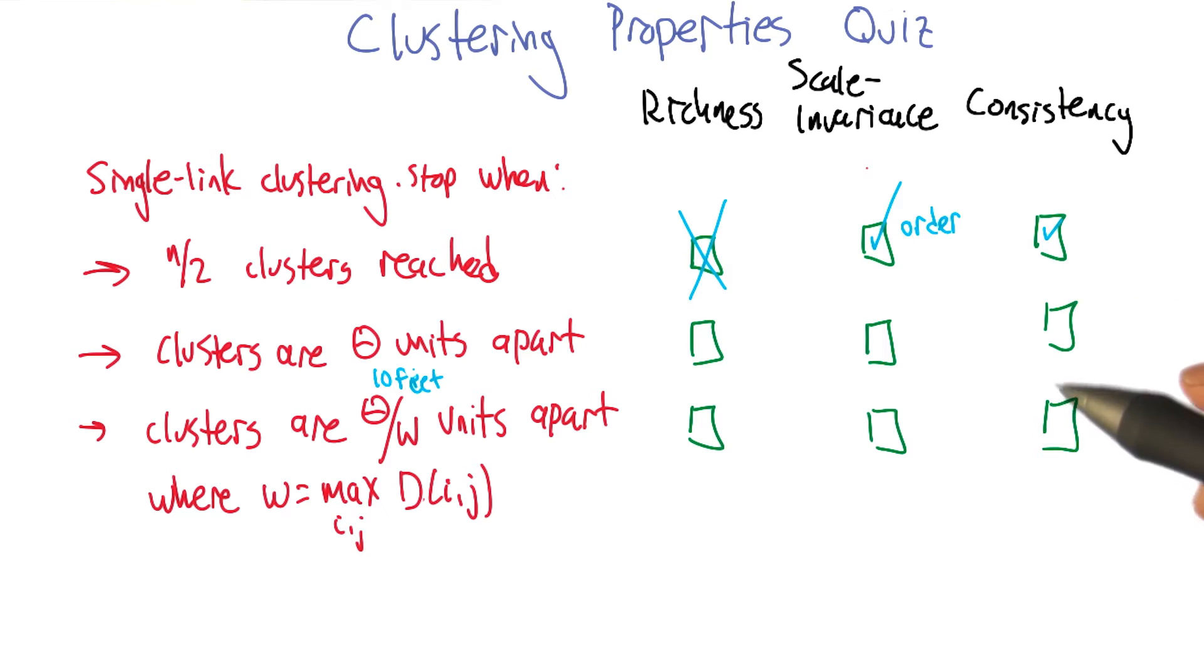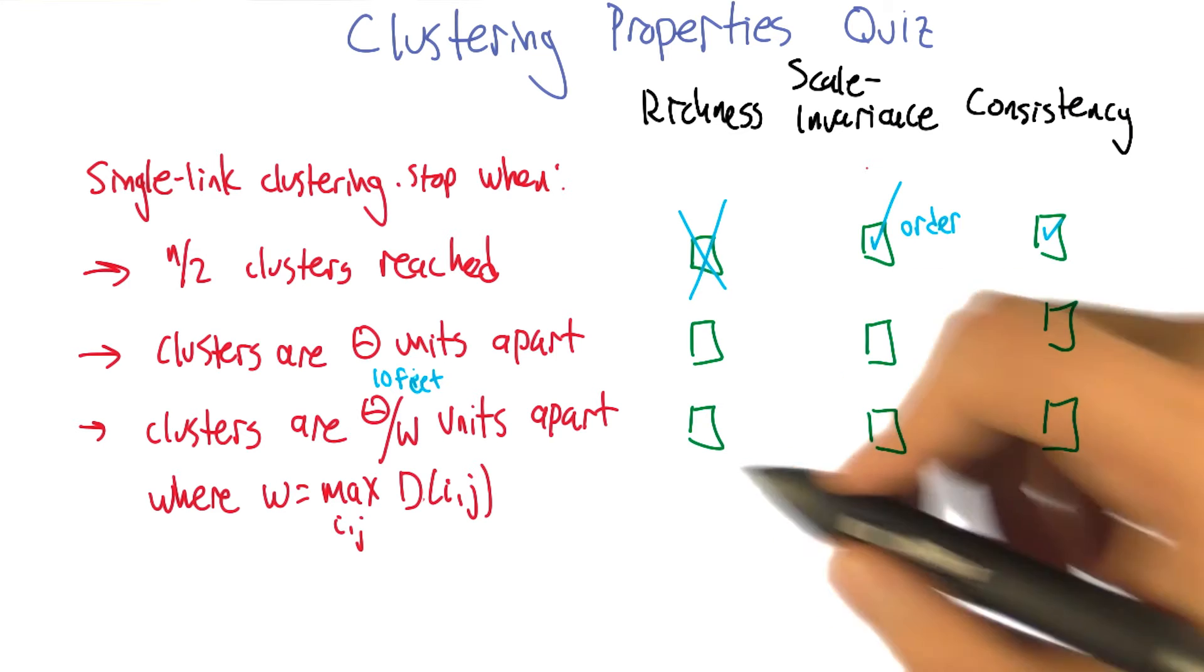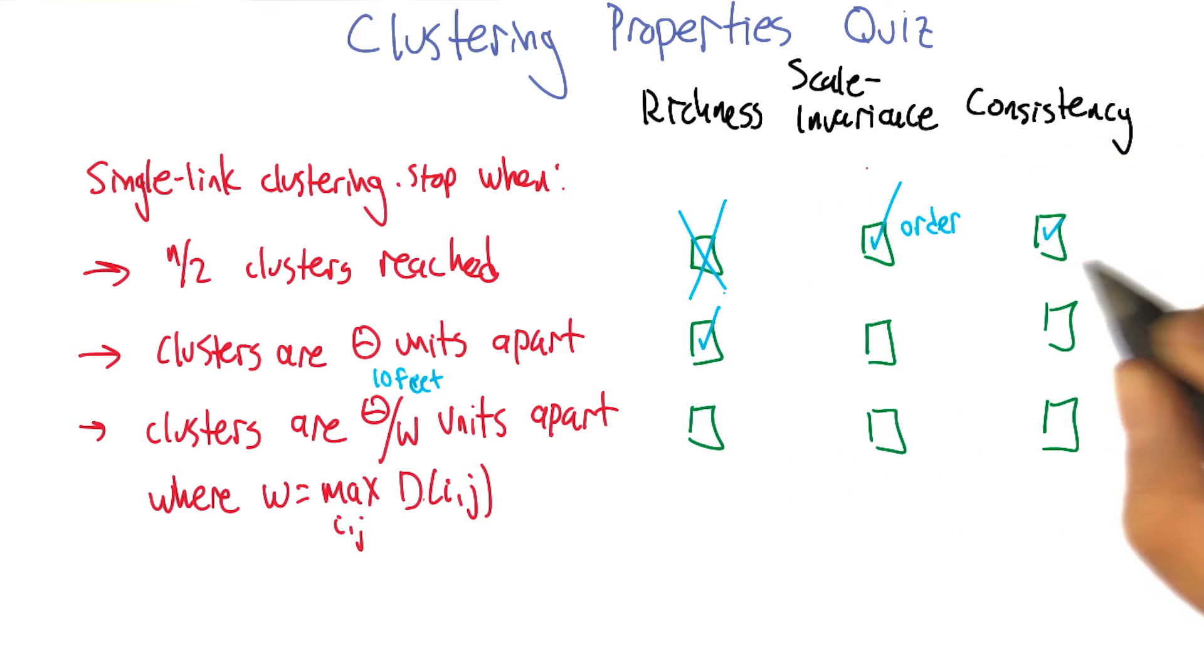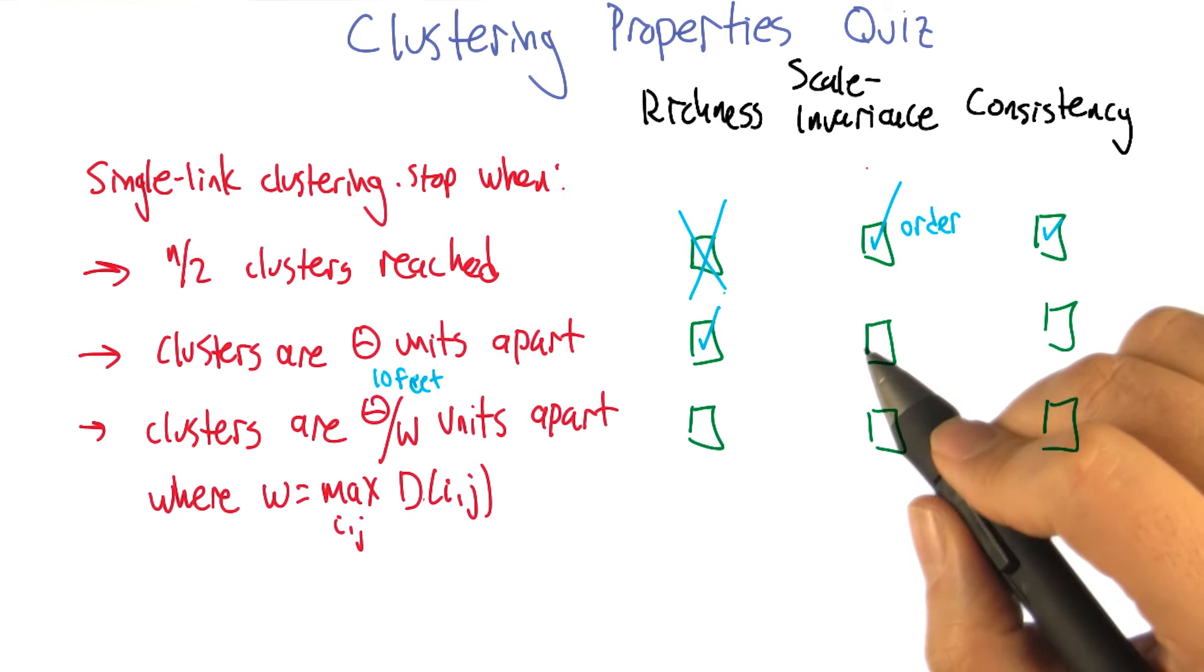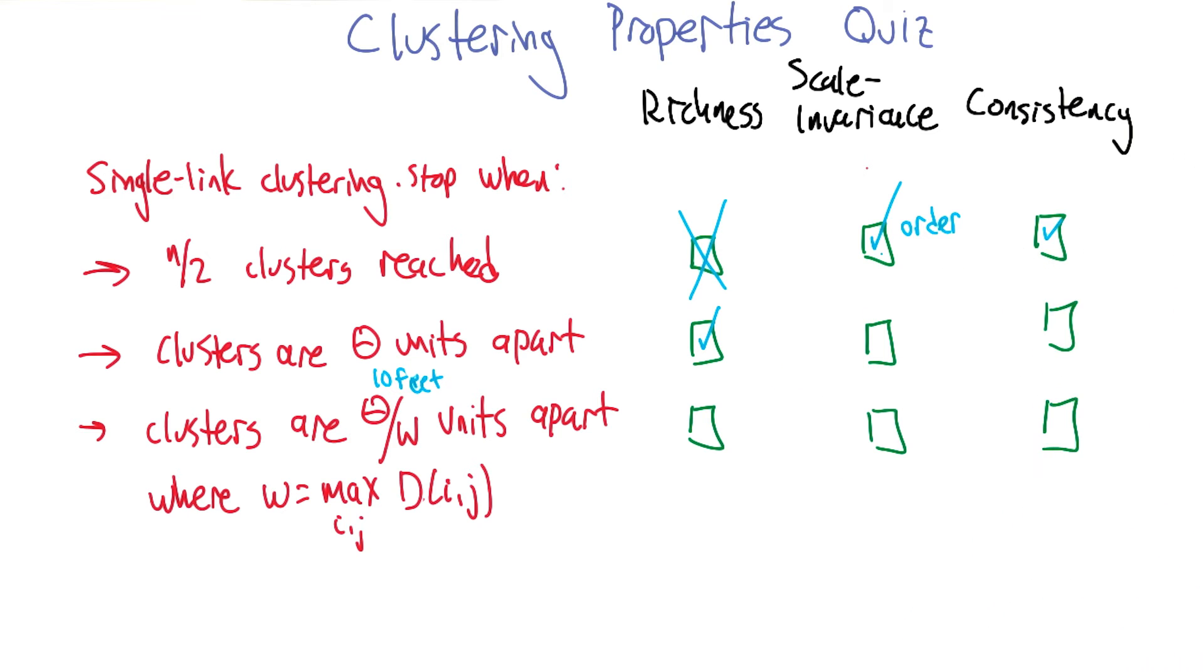Yep. If on the other hand, all the points were more than 10 feet apart, you would have n different clusters. And you could do any of them in between. So this is rich. It is indeed. That's right. We can always muck with the units, or muck with theta for that matter, so that we can group, we can make any number of clusters in any combination that we want.